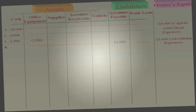Transaction 5: paid $6,000 for office supplies. Cash goes down and supplies — which is an asset — goes up. That should be straightforward.